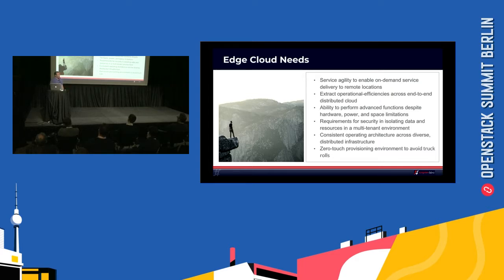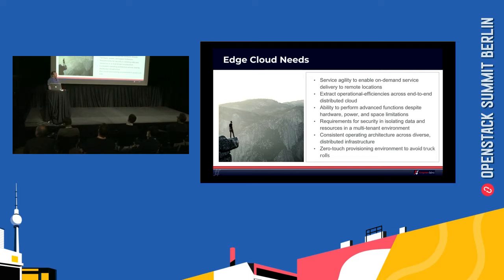Even though you're going to be limited on hardware power and space, one of the primary things that needs to happen on the edge is security. This has been brought home by multiple hacks from multiple companies — companies can no longer afford to have a distributed infrastructure that is not secure in itself. You also need to have a consistent operating architecture, simply because if you have too many things going on across your entire network, you won't be able to manage it long term.